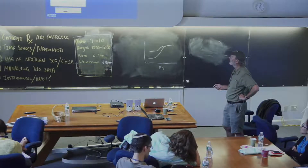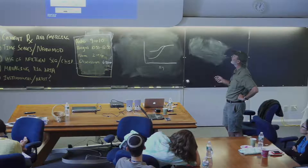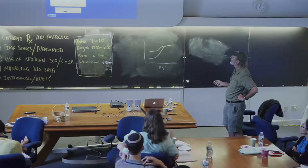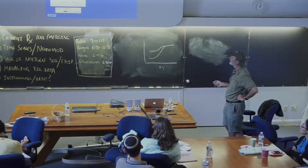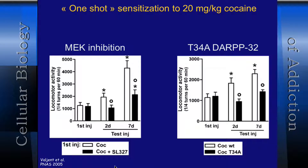You can look at this differently. In locomotor sensitization experiments using the Girault lab's one-shot sensitization paradigm — one injection, then measured two or seven days later — if you do this experiment in the presence of an ERK kinase antagonist that competes for the ATP binding site, you block locomotor sensitization. So the MEK-ERK pathway is not only biochemically relevant, it's relevant to the elicited behavior. Similarly, using the Thr34-alanine mutant, you block the potentiation in locomotor activity.